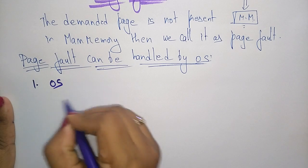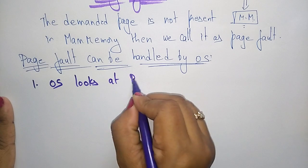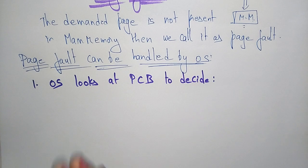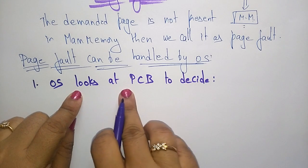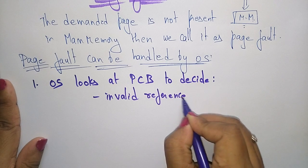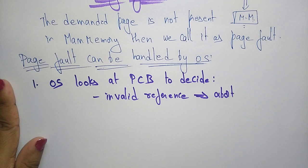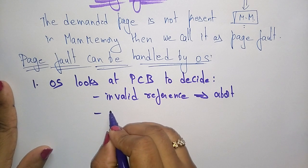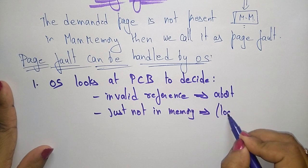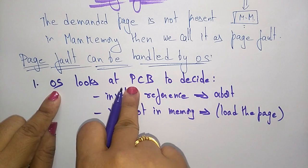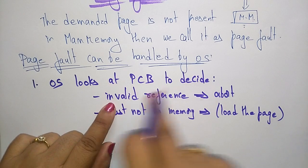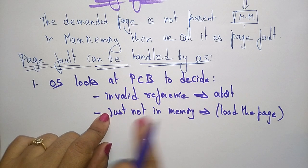So first, whenever the page fault occurs, control transfers the program to the operating system. Then the operating system first looks at the PCB — the Process Control Block — to decide whether the requested page is an invalid reference or just not in memory. If it is an invalid reference, it aborts the program. If it is just not present in memory, then it loads the page.